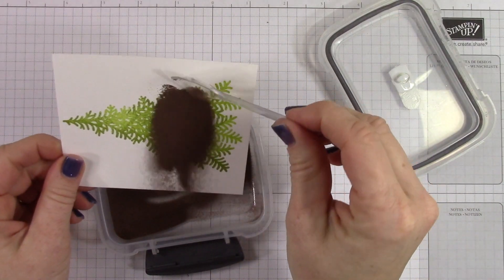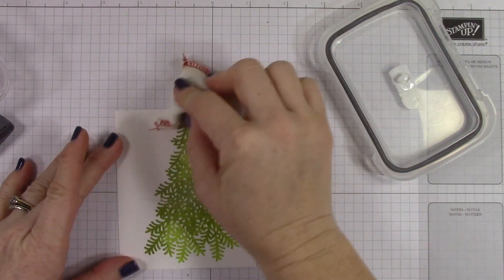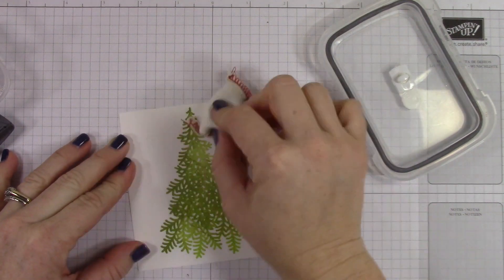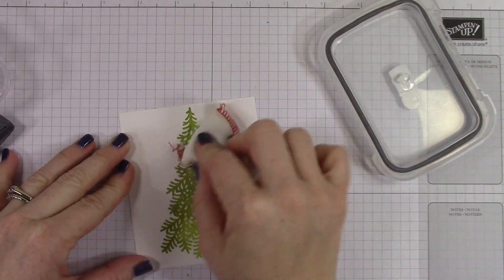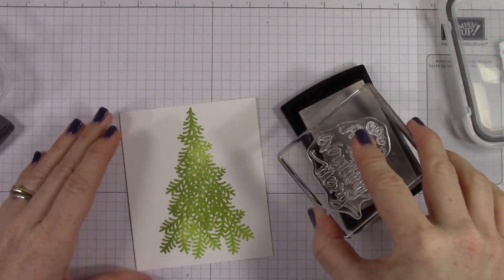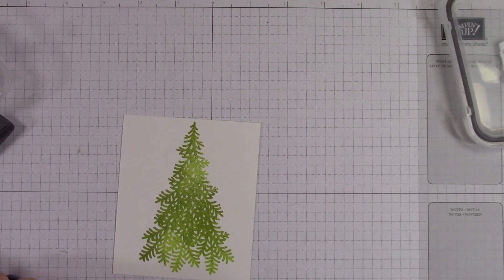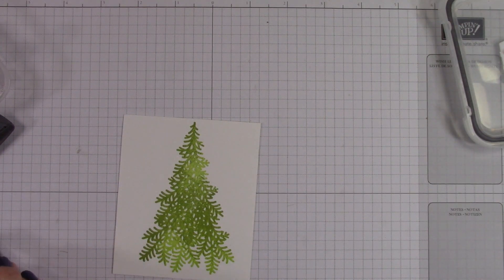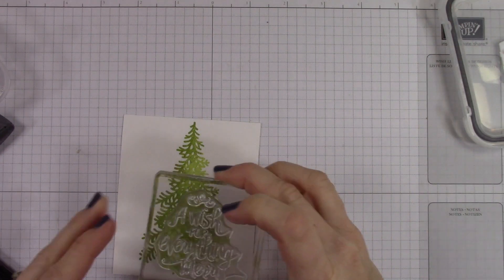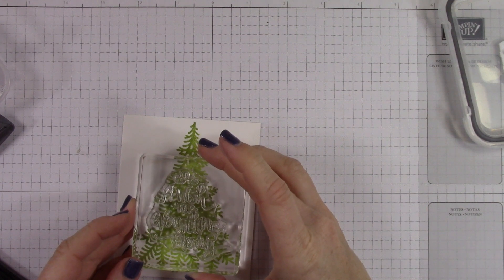Okay, so now I'm using my copper embossing powder, making sure nothing's gonna stick to this where I've inked it. Taking my embossing buddy, rubbing it over the cardstock. Gonna go ahead and use Versamark ink with my sentiment here. By the way, I'm using the Ready for Christmas stamp set - that is where the tree is from.